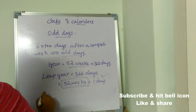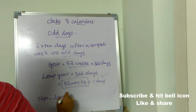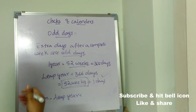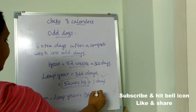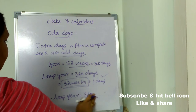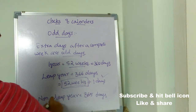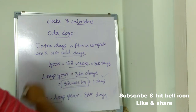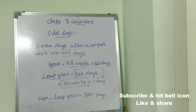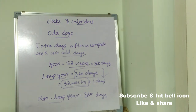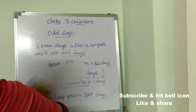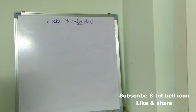Now let's see what is a leap year and a non-leap year. A non-leap year is the normal year — every year we have 365 days, that is called a non-leap year. In a leap year there will be one extra day, making it 366 days, one extra day compared to the normal year.